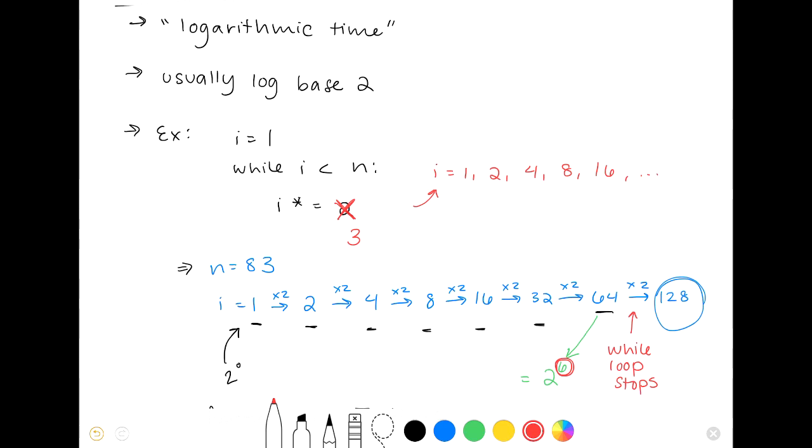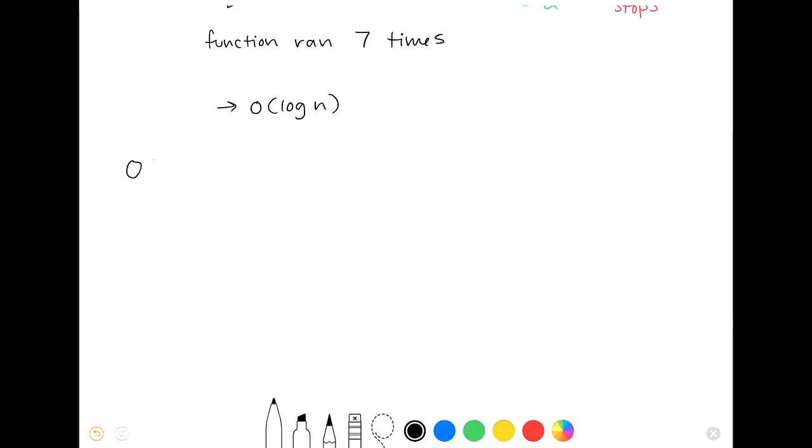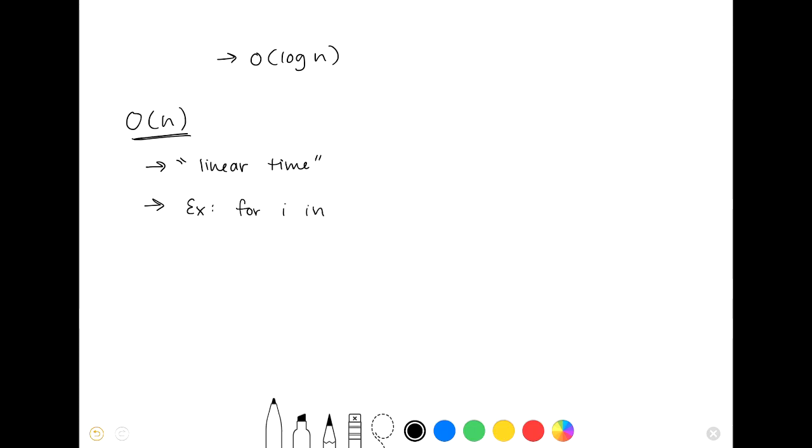Next up in our order is O of n, which is just called linear time. This indicates the number of iterations your code runs through is directly proportional to n. So if n is 35, then your code will go through approximately 35 iterations. And this usually looks like this. So this is pretty straightforward.